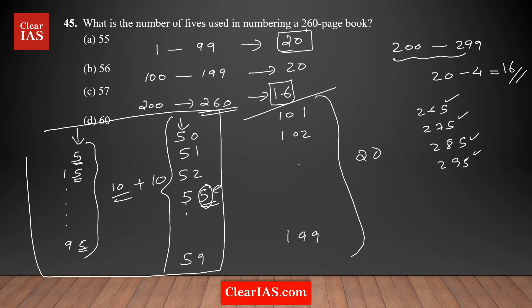So the total number of 5s if you are numbering a 260-page book is: you add all of them. Your answer is 20 plus 20 plus 16, which equals 56. So option B is the right answer. Option B is the right answer.